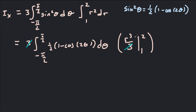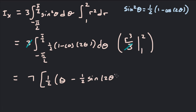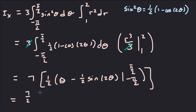So we have 7 times ½ times the integral. The integral of 1 is θ, and the integral of cos 2θ is ½ sin 2θ. Evaluating from −π/2 to π/2: π/2 minus (−π/2) gives π for the θ term, and we subtract ½ times the sine terms.